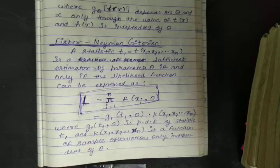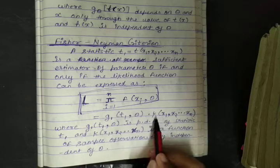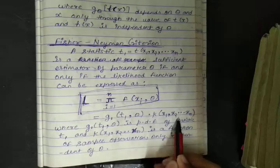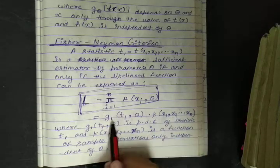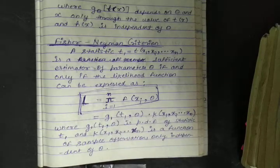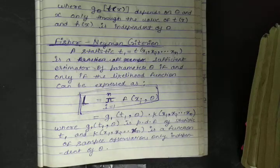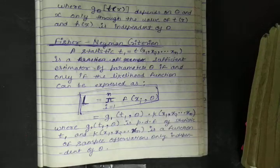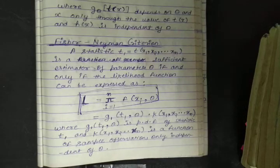See, this value must have to be independent of θ, it should not contain theta. And this value can contain θ, t_1 as well as other things, but this value must have to be independent of θ.